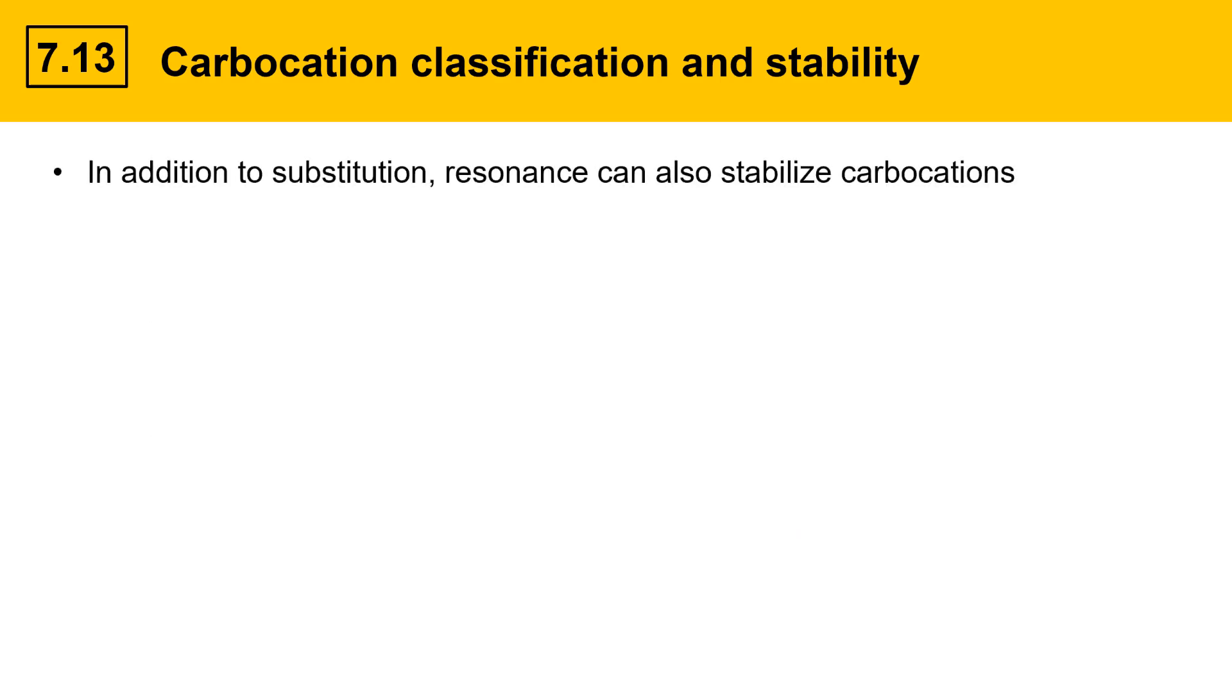In addition to substitution, resonance can also stabilize carbocations. Here's an example to show that. Compare the two carbocations here. The one on the right has a resonance structure and we can see that if we shift the electrons over this way, share them differently, that gives a resonance delocalized structure where the carbocation is in a different spot.